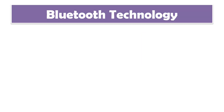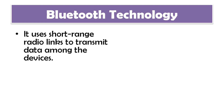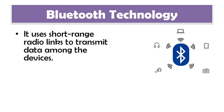The next technology is Bluetooth. Bluetooth technology you all have used in your smartphones for sharing pictures or videos with friends. This technology uses short-range radio links to transmit data among devices. And what kind of devices? There are many different types — for example, your laptop, your smartphone, your headsets, your digital camera, and more. In all of these, you can transmit data with the help of Bluetooth technology.